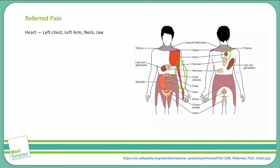Referred pain from the appendix is something you'll get a lot of board questions on. Even though the appendix is located in the right lower quadrant, pain from the appendix classically begins in the periumbilical region and migrates to the right lower quadrant — specifically to a site called McBurney's point.